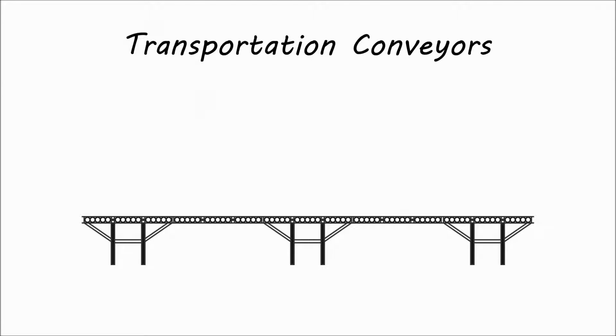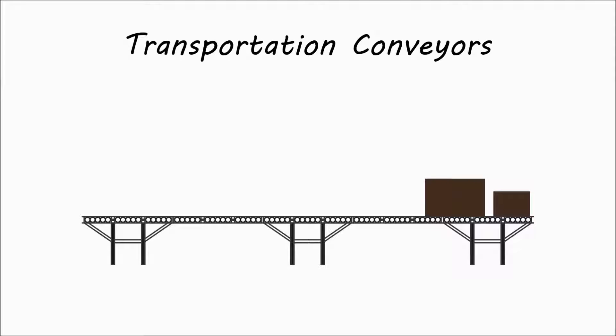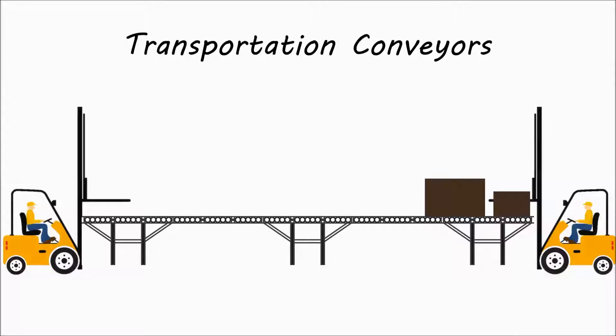Transportation conveyors move pallets or cartons from point A to point B. They can be used for a variety of applications from full pallet loads to lightweight items that vary in size. Transportation conveyor options are available to accommodate requirements such as desired speed and product handling procedures.